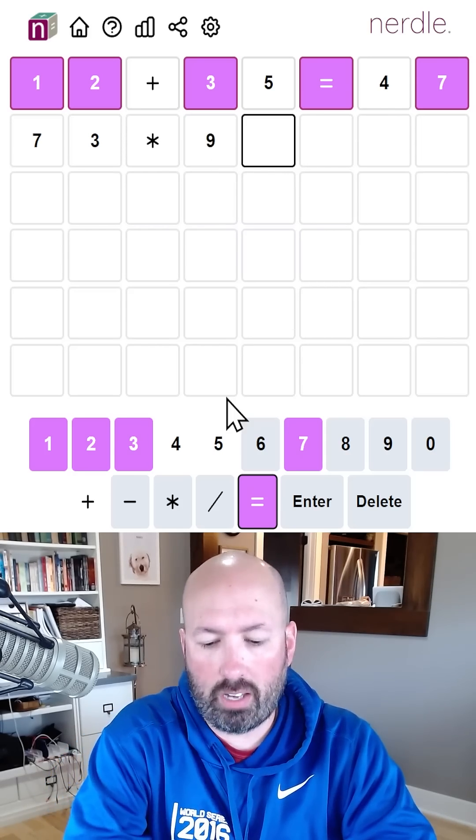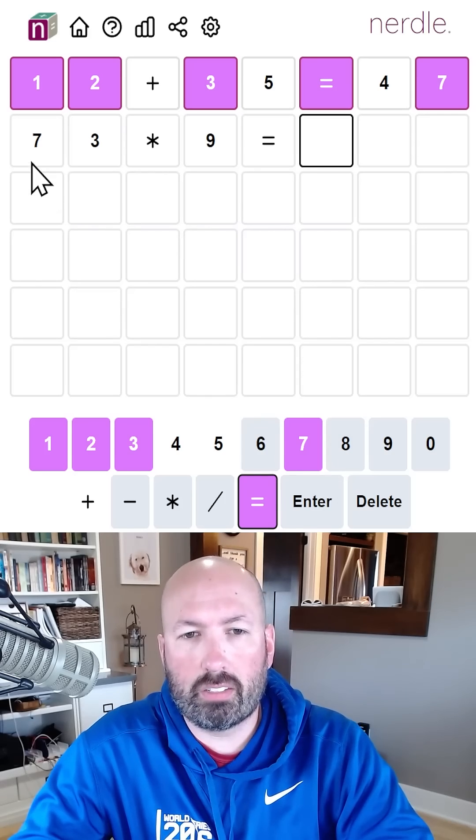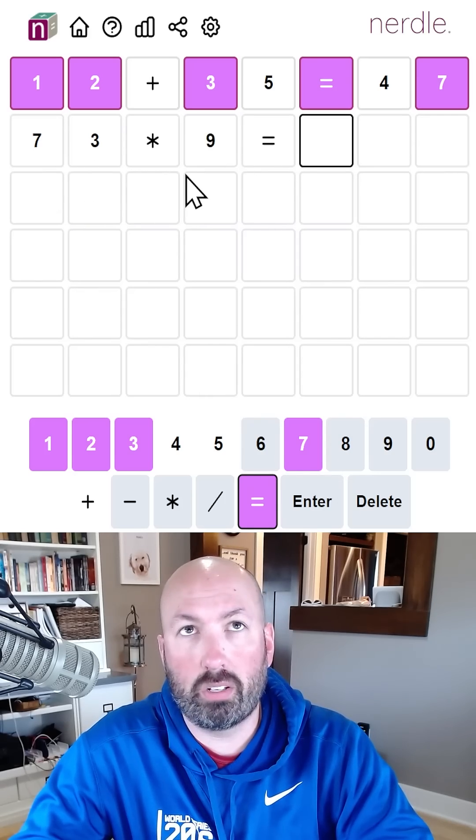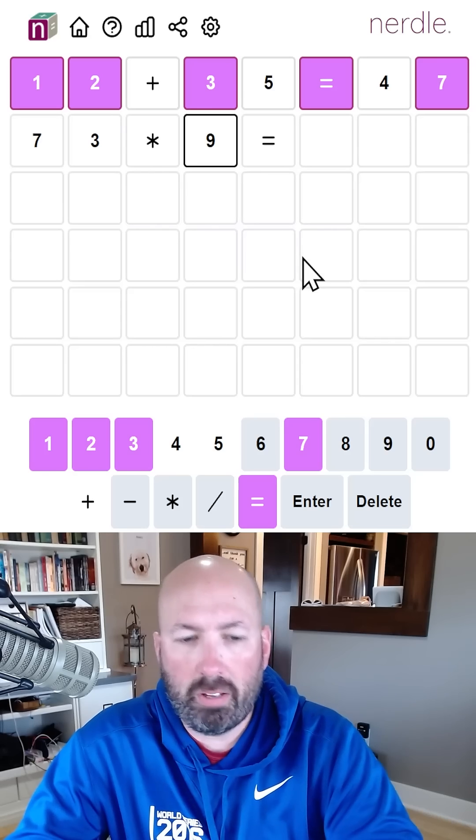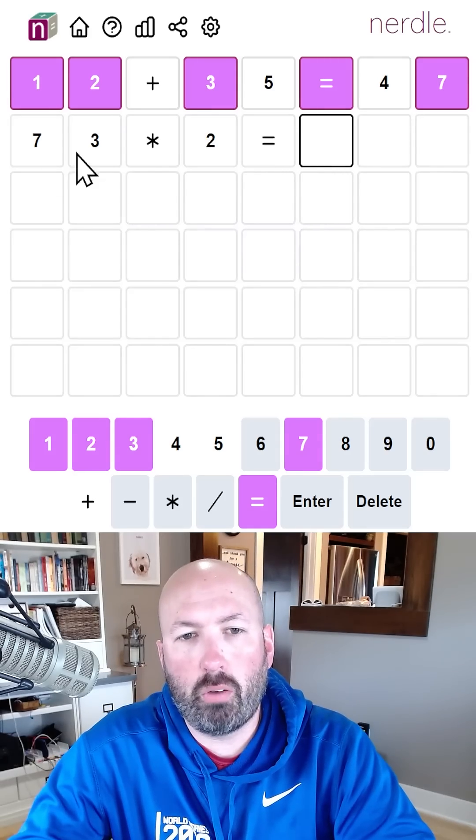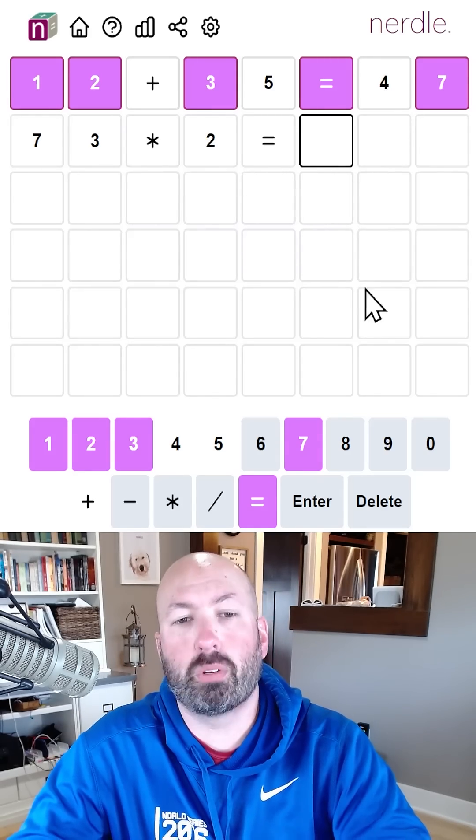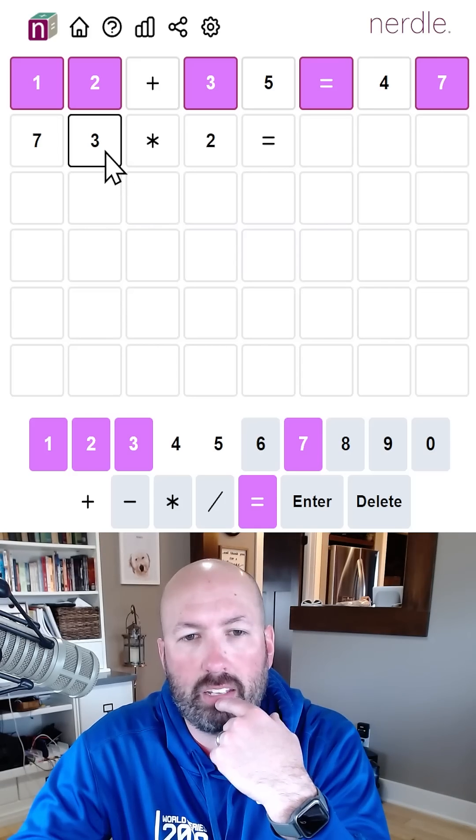So times nine maybe? What's 73 times nine? That would be 630 plus 27, so 657, but we don't have a five. What about 73 times two? That would be 146? Oh, we don't have a four. So it's not 73.